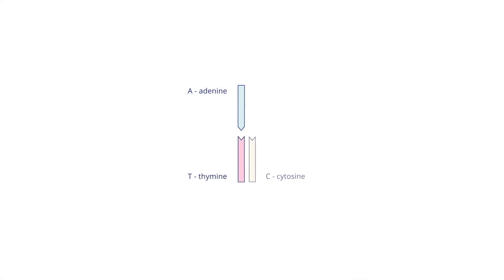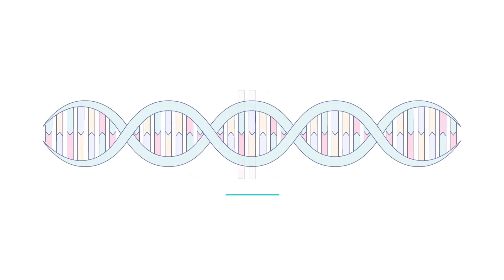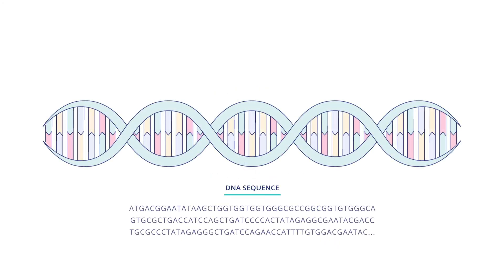Adenine pairs with thymine, and cytosine pairs with guanine. We all carry the same nucleotides, but the order in which they are arranged is responsible for the incredible diversity among us.